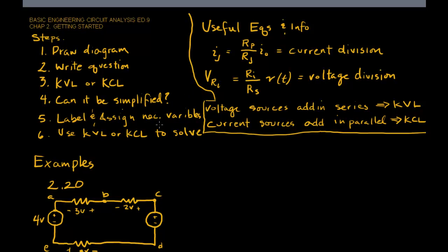Then you want to label and assign the necessary variables. You could label everything, but it'll help to keep you tethered to the problem if you just label and assign what is necessary. Sometimes you might not know everything that's necessary at the beginning, and you can just add those as you go. But you do want to try and identify what is missing to solve the problem at the beginning. Then finally, you use KVL or KCL to solve the problem.